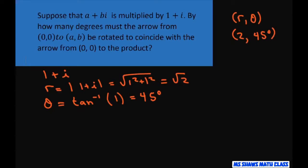So basically let's write this in polar form, which is going to be square root of 2 times cosine of 45 degrees plus i sine of 45 degrees. Or we can write this as square root of 2 cis of 45 degrees.